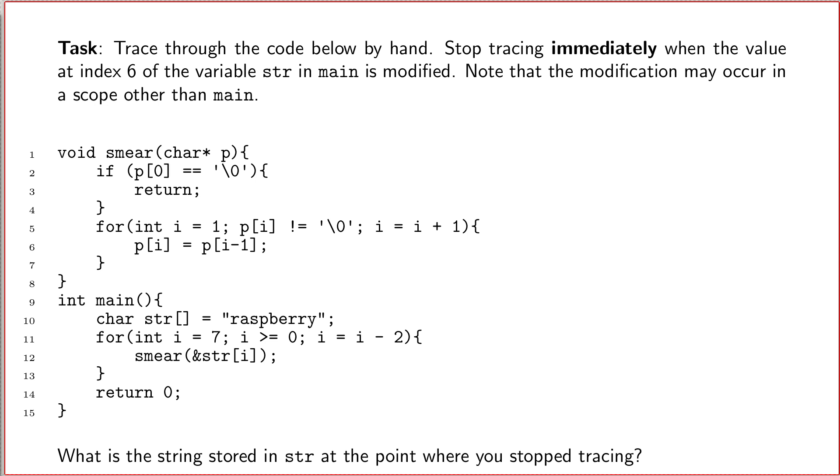or a string and pointer arithmetic tracing question, and it is of that style where the prompt will say there is some variable in main, this variable str, stop tracing immediately as soon as a modification is made to this specific index of it. So, I'll trace through it.